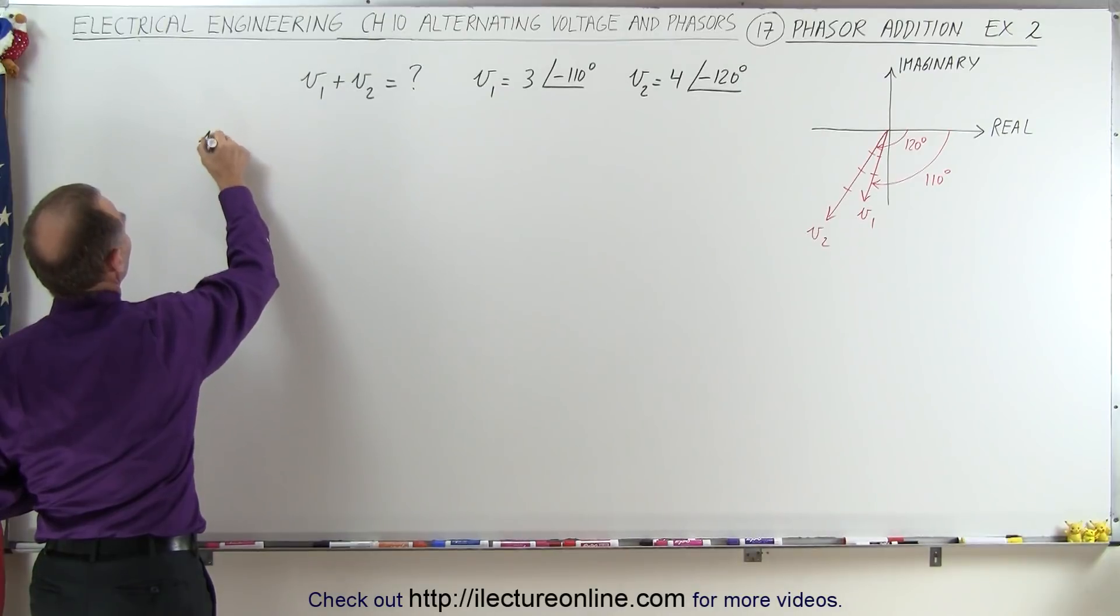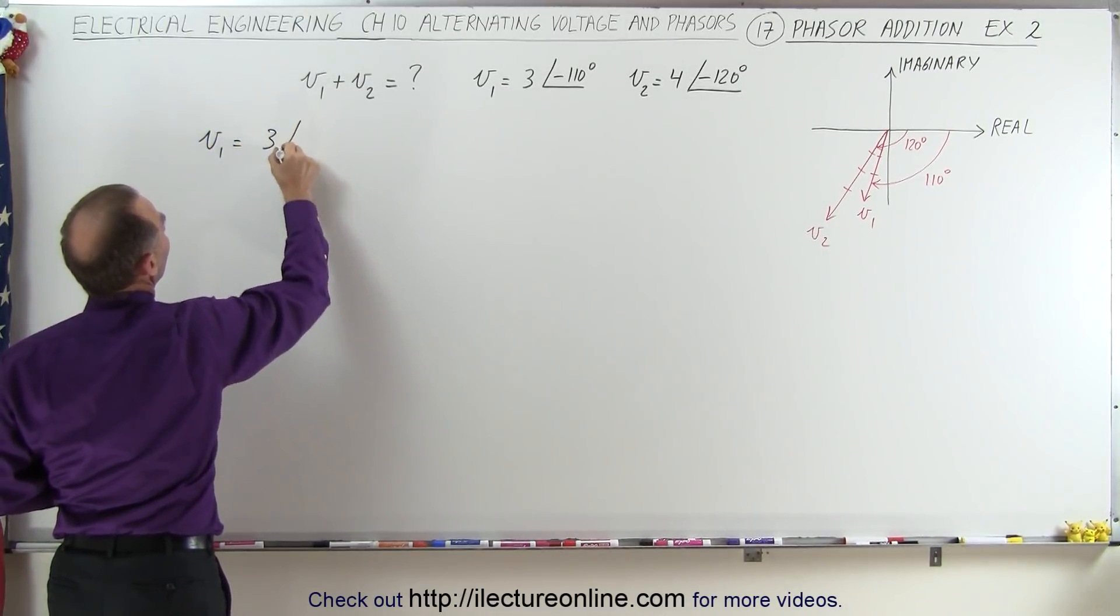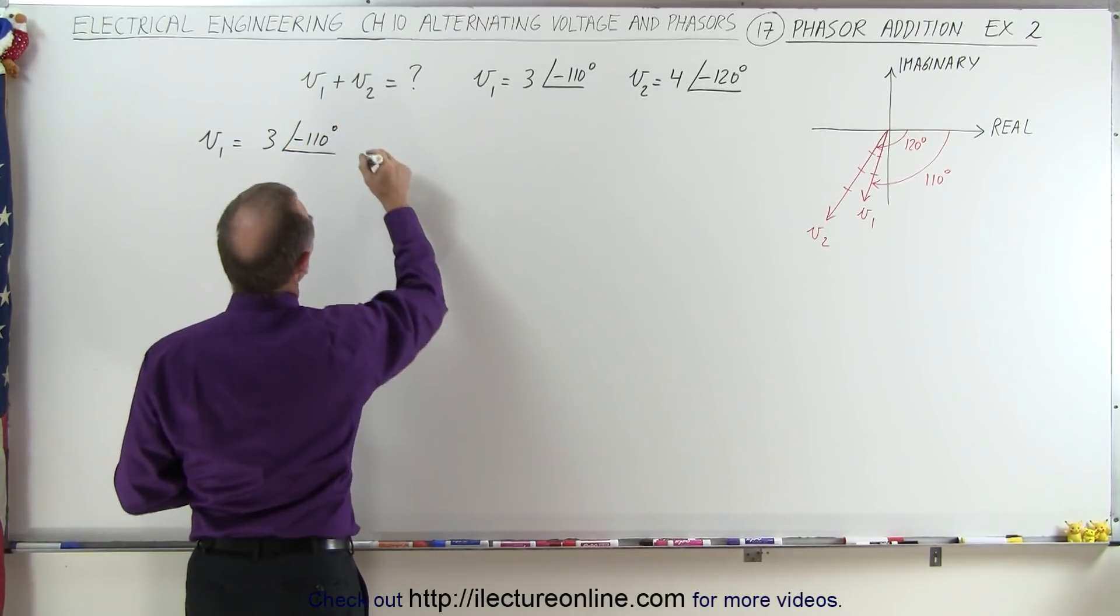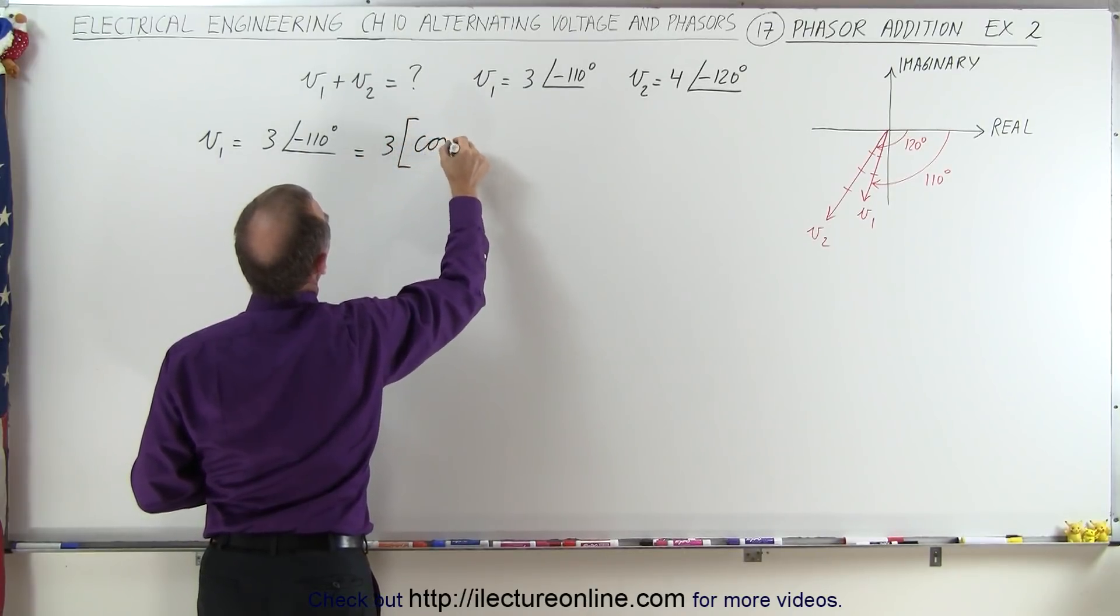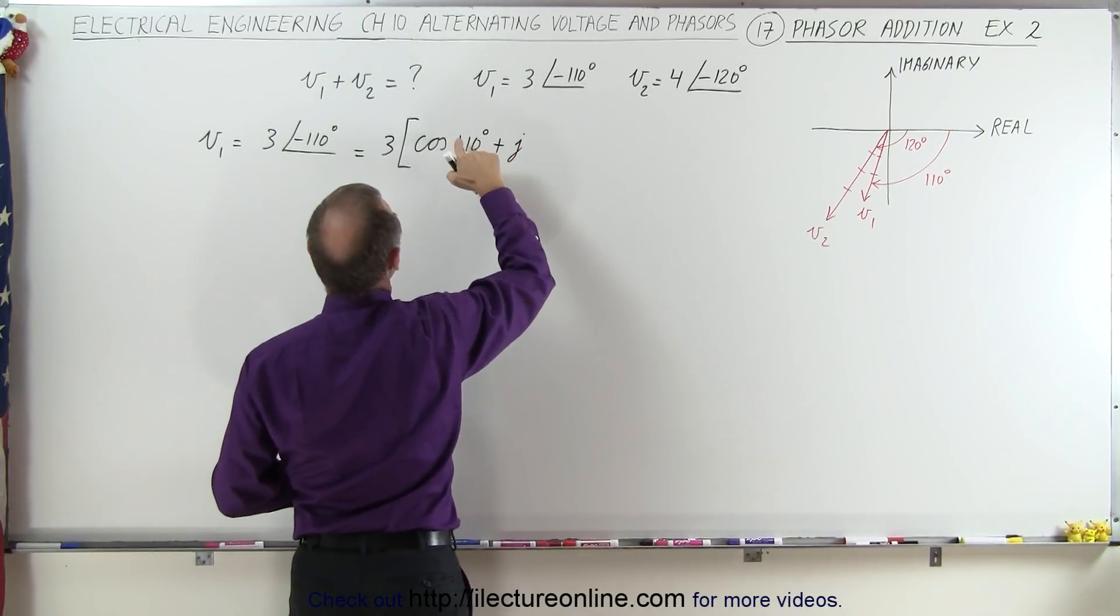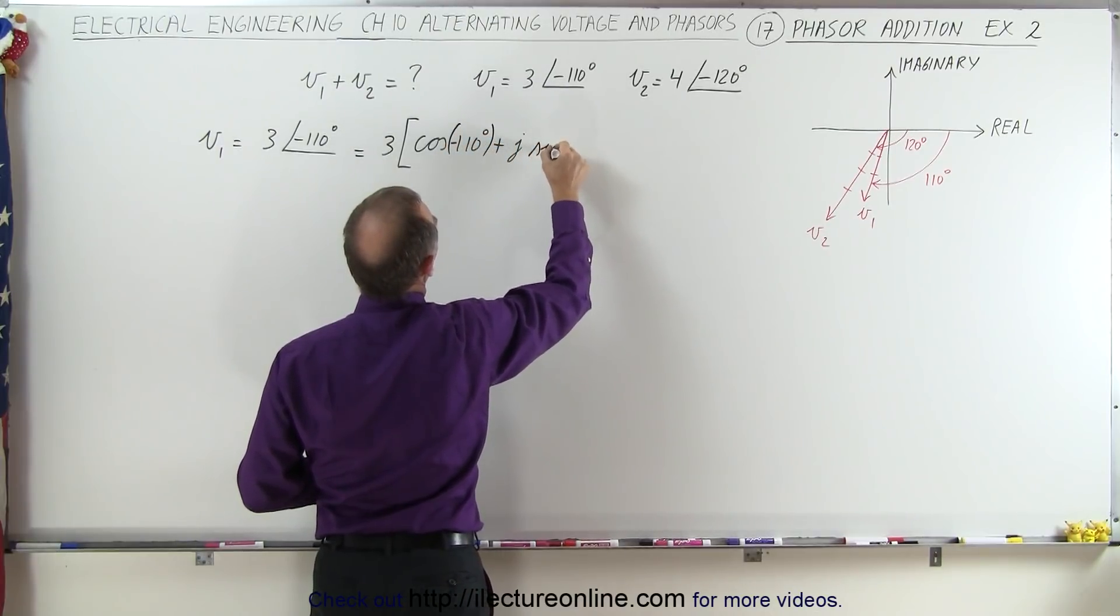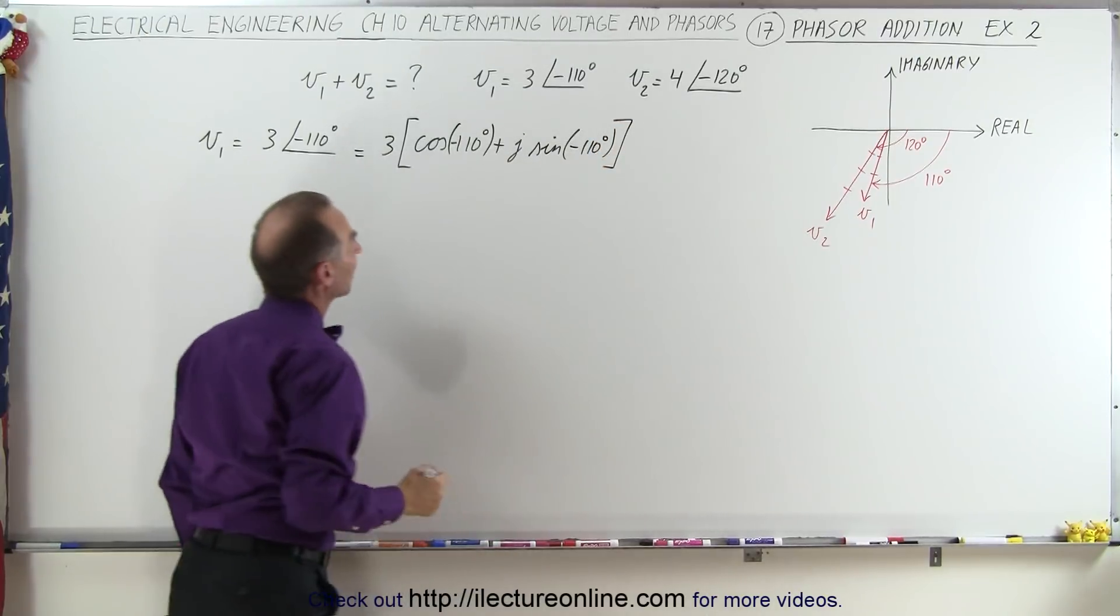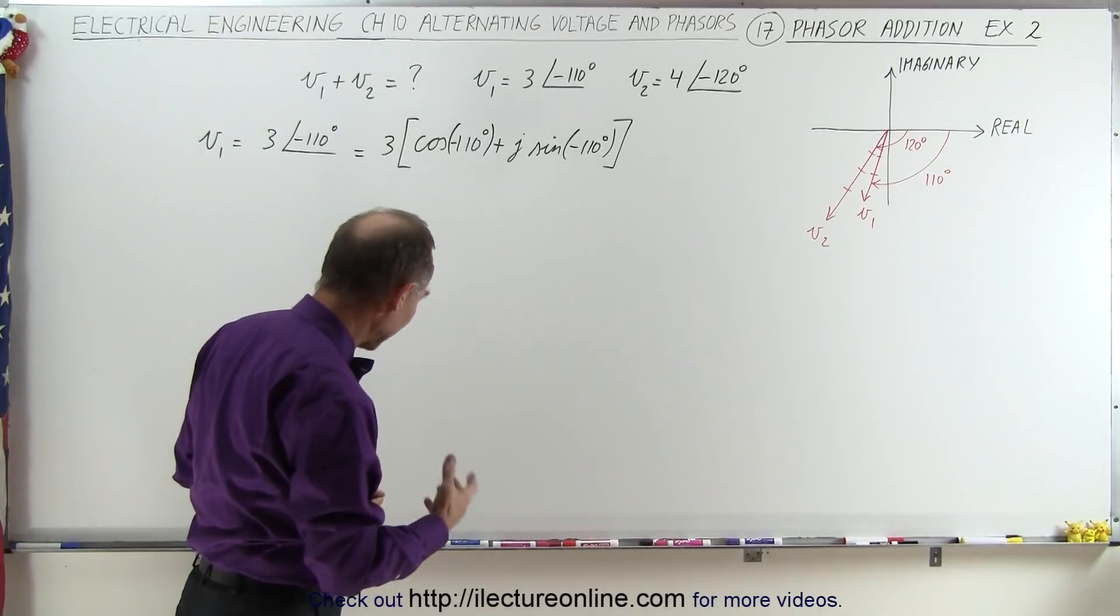So let's go ahead and first take V1, and that's going to be equal to the magnitude 3 times the phase angle of minus 110 degrees. And then we're going to write this as the magnitude 3 times the cosine of minus 110 degrees plus j times the sine of minus 110 degrees. Let's see, we want to convert that. What's the cosine of minus 110 degrees?